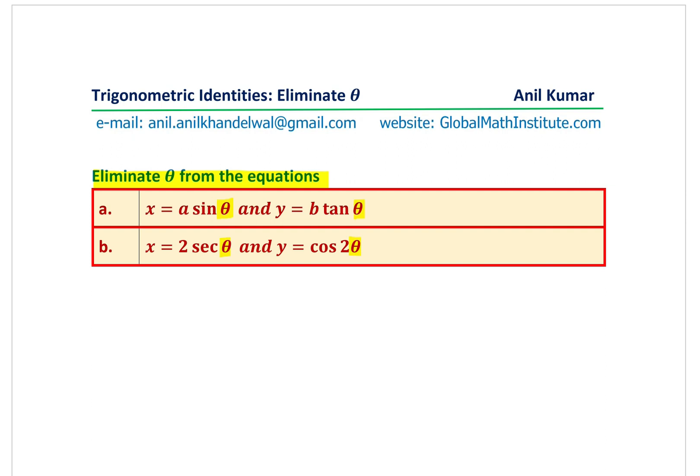How do we do that? And what is the strategy behind? And that is to use the trigonometric identities. And therefore, I've kept this topic here as trigonometric identities. And one of the important application is to solve simultaneous equations and eliminate the argument theta.